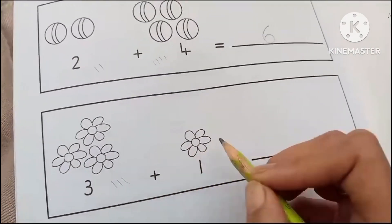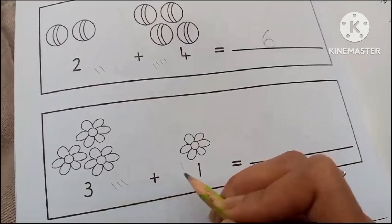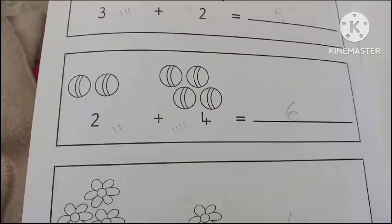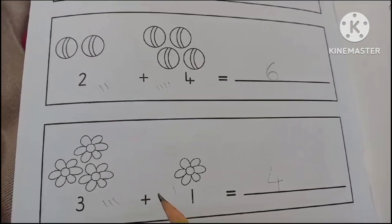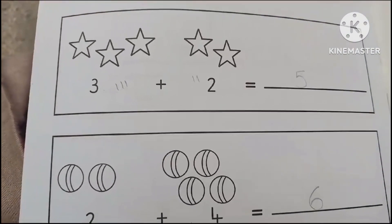1, 2, 3. 3 flowers and 1 flower. 1, 2, 3, 4. So 4 flowers all together. Thank you so much for watching.